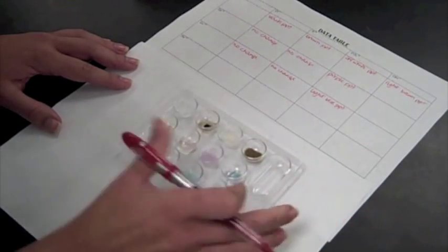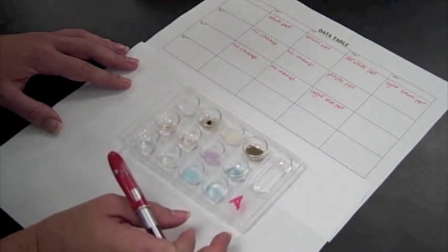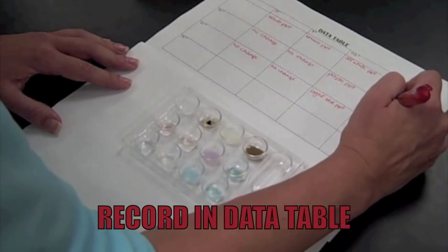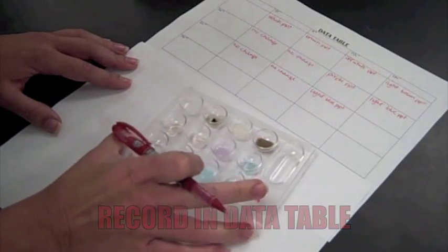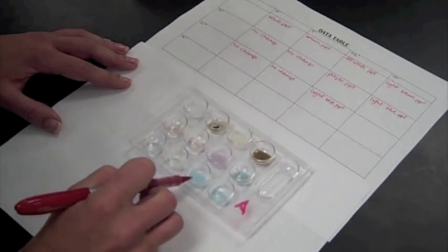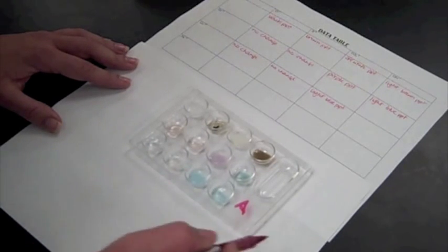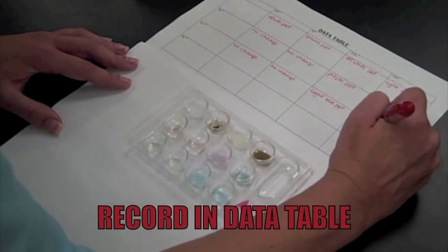And on the cobalt, it's a pretty light blue precipitate. And on the copper, it's almost the same color as the copper carbonate. But it's even a little bit lighter. So I'm just going to say lighter blue.